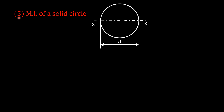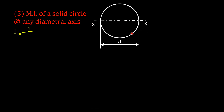Number five: moment of inertia of a solid circle about any diametral axis XX is I_XX = πd⁴/64, where d is the diameter of the circle.